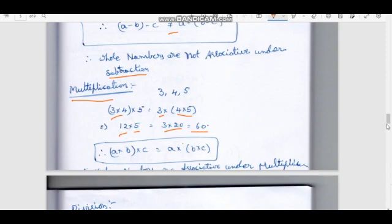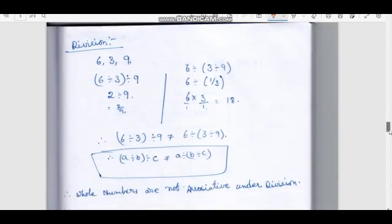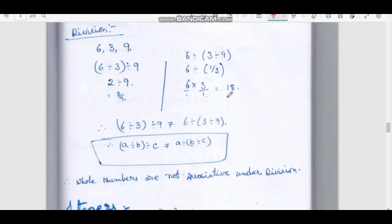Next, division. Using numbers 6, 3, 9. We have (6 ÷ 3) ÷ 9. So 6 divided by 3 is 2, then 2 divided by 9 gives 2 by 9. Now the other way: 6 ÷ (3 ÷ 9) — 3 divided by 9 is 1 by 3, so 6 divided by 1 by 3.